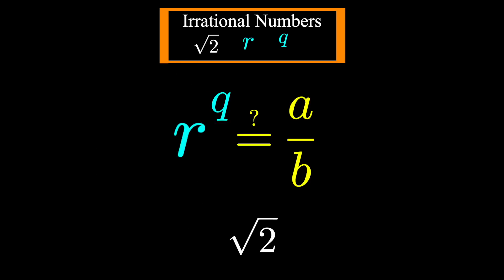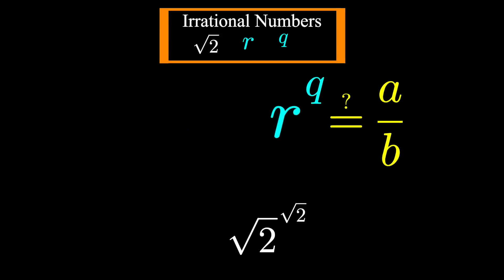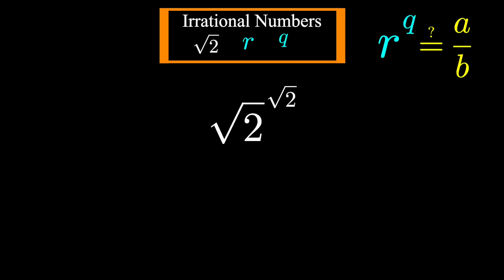Can you think of an irrational number to place in the exponent of square root of 2? How about square root of 2 again? This might be a little tough to calculate the value of, but logically, one of two things are true about this number.